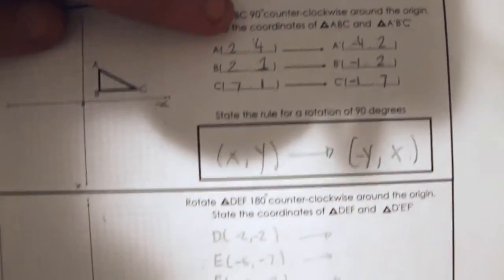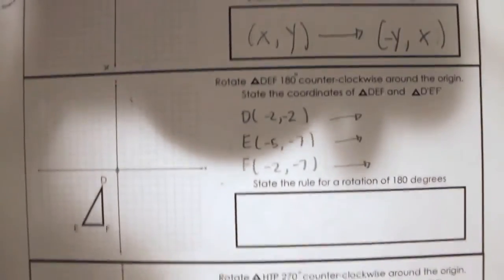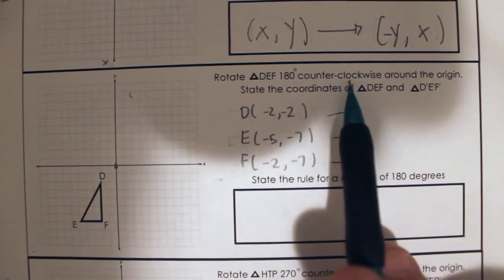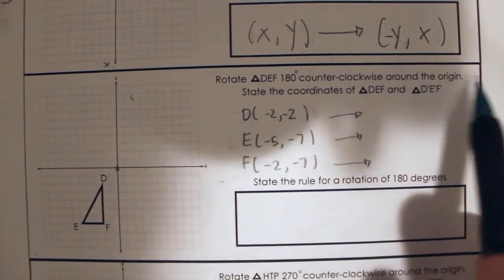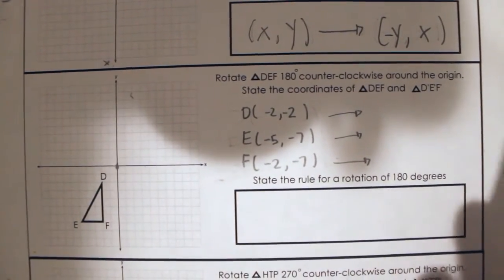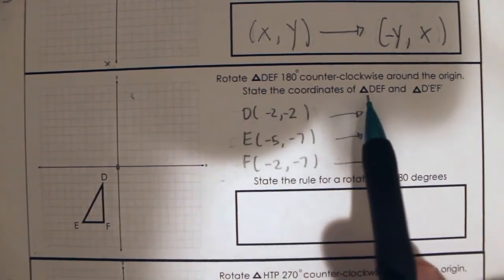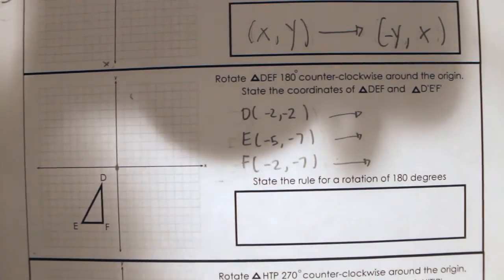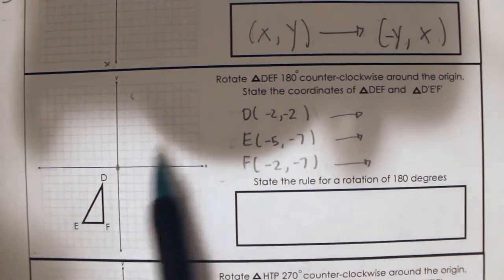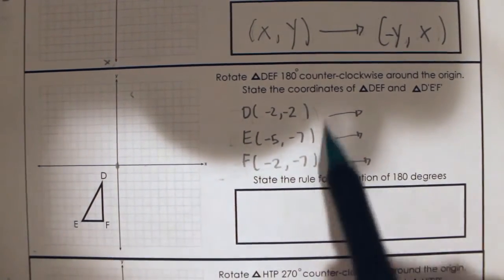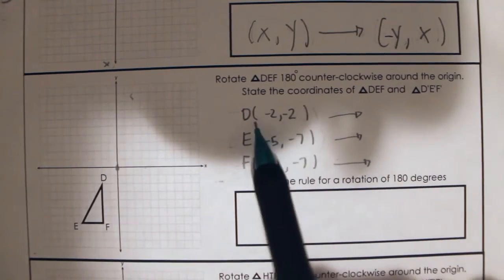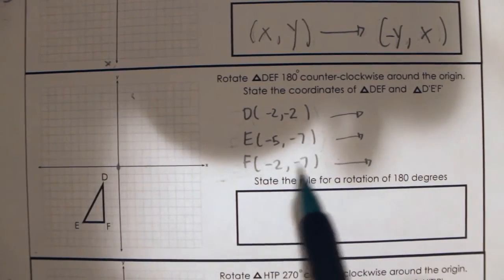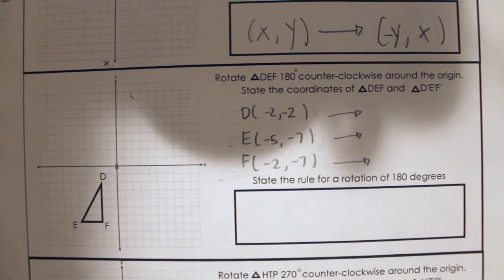Let's try another example — we're going to rotate 180 degrees now. We're going to rotate triangle DEF 180 degrees counterclockwise around the origin. State the coordinates of DEF and D', E', F'. Here are the coordinates: D is (−2, 2), E is (−5, −7), and F is (−2, −7).